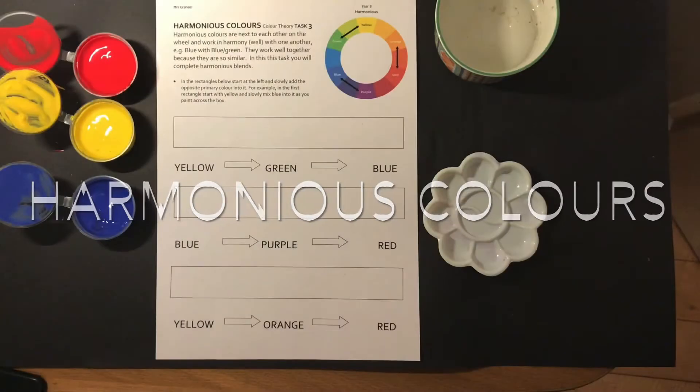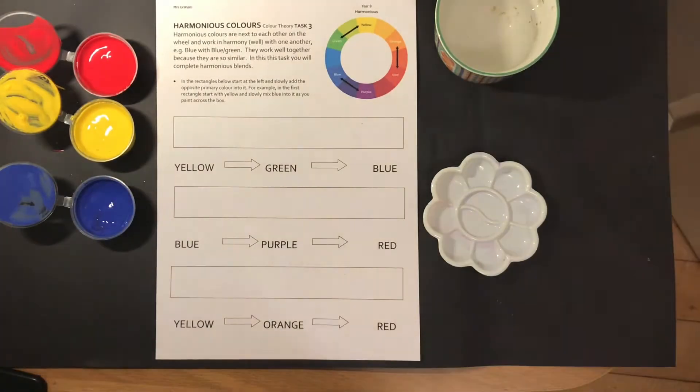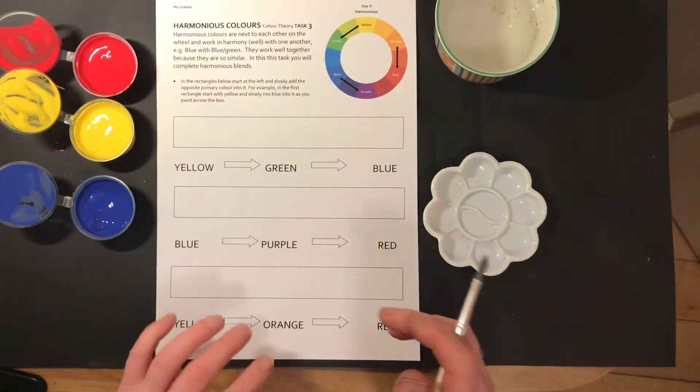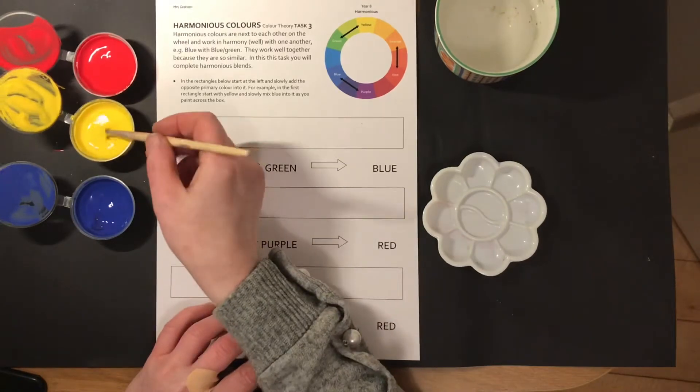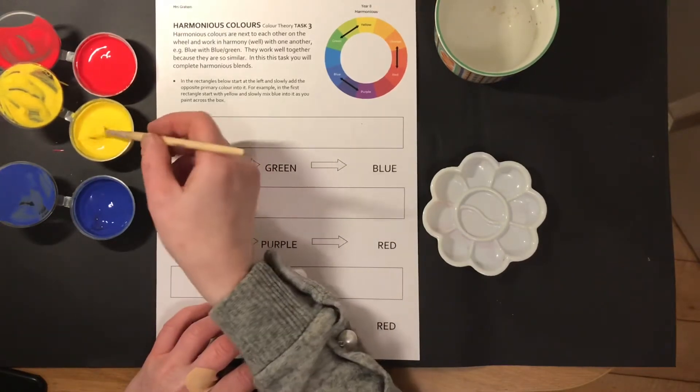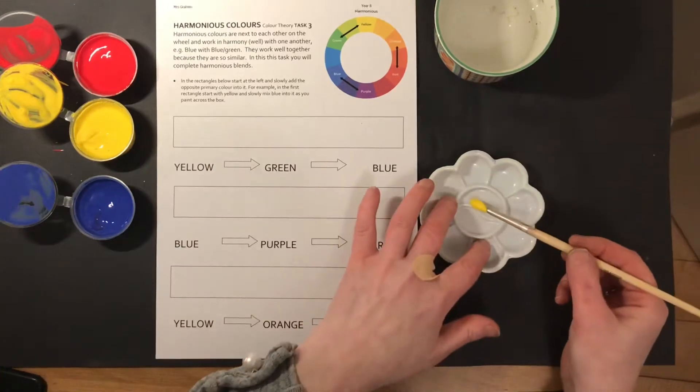In this video we're going to be looking at harmonious colors. Harmonious colors are colors that are next door on the color wheel, so what we're going to create is harmonious blends. In this task we're going to create harmonious blends.